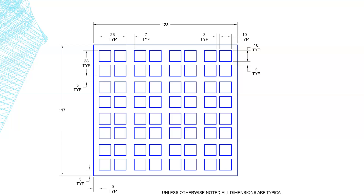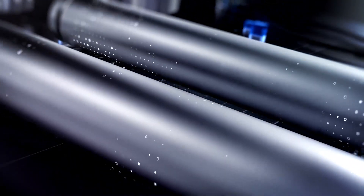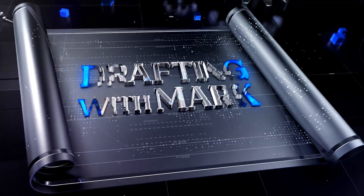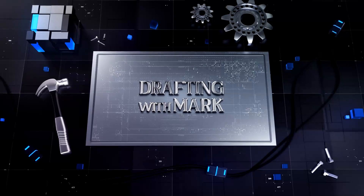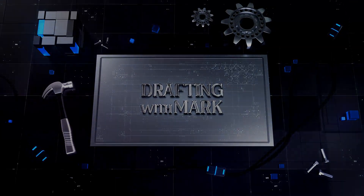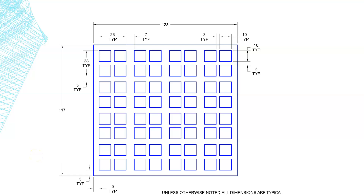Welcome back. In this video we're going to have a square with a whole bunch of other squares. One of the best ways of doing this is going to be a rectangular array. We can do a copy and some other things, but in this case the rectangular array is going to be our best bet, so let's go ahead and get started.